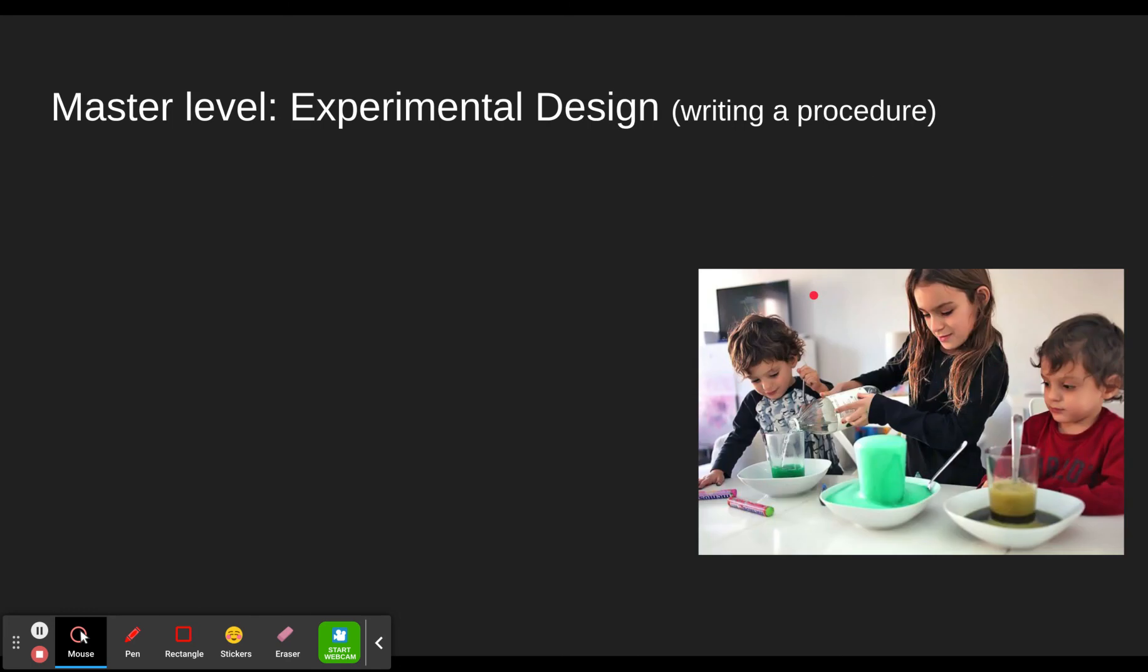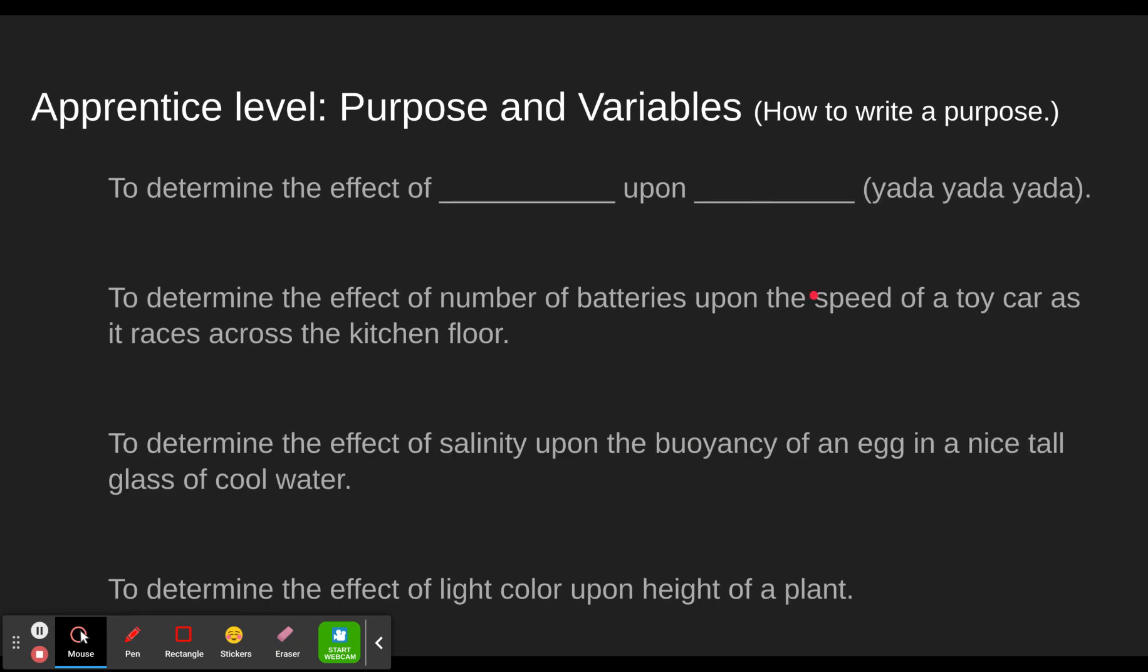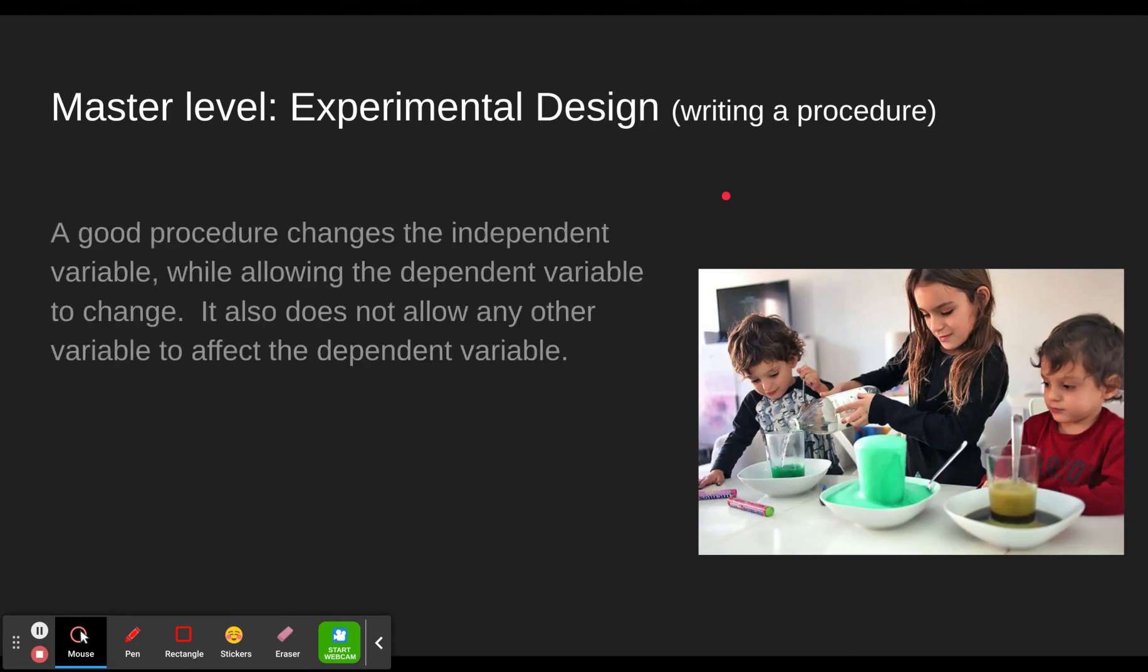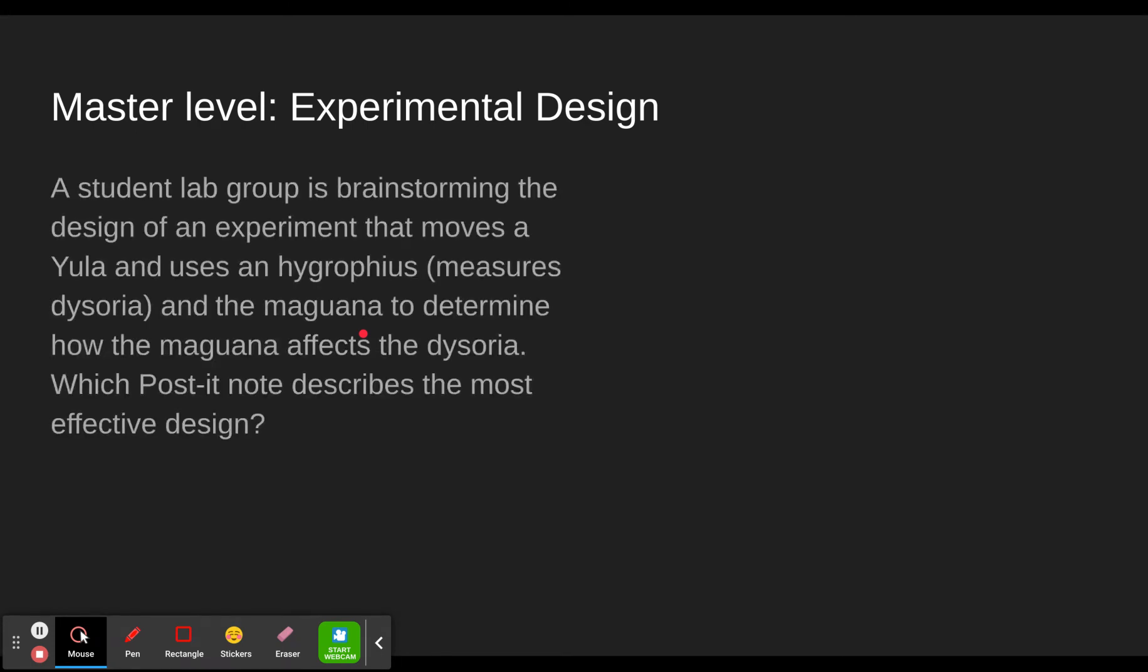Next level. Master level. Experimental design. So now, how do we write a procedure? We now have a purpose. We did that here. The effect of something on something else. How do we write a procedure? Well, a good procedure changes the independent variable while allowing the dependent variable to change. It also does not allow any other variable to affect the dependent variable. In other words, we hold them constant. So we hold everything else constant. So let's see how they help you figure this out in the thing. So you'll get a statement like this.